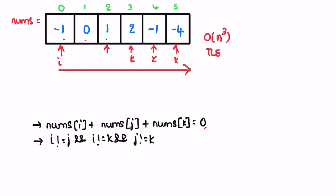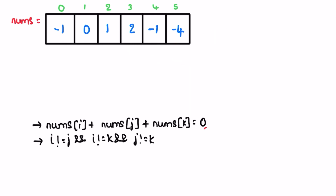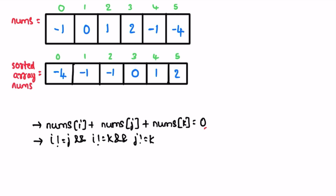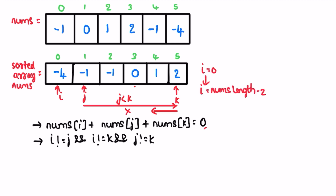So how can we solve this in a better approach? What if we sort the array in ascending order? After sorting, the array will look like this. We use a loop where i starts from the zeroth element and iterates until nums.length - 2, because we declare two more pointers: j starts at i + 1 and k starts at the end of the array, moving right to left. The while loop runs until j is less than k.